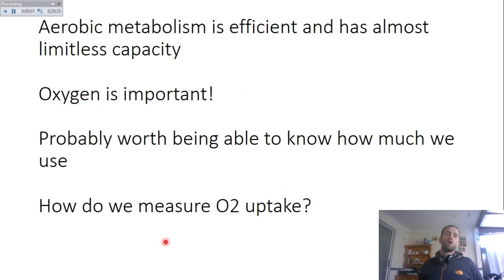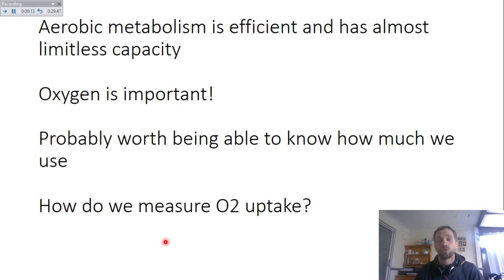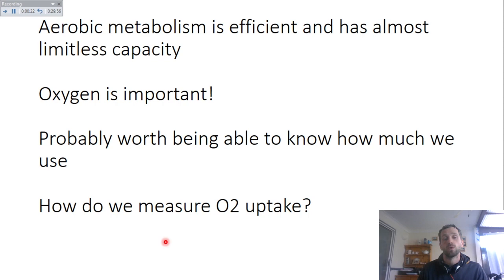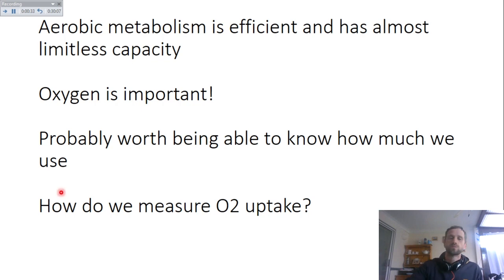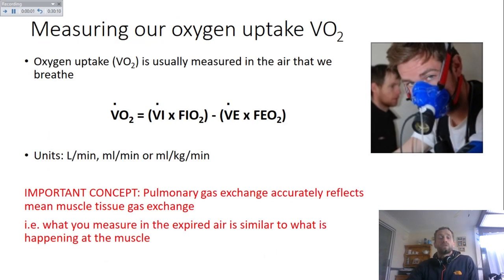All of this has been to establish that aerobic metabolism is an incredibly important system — the most efficient with regard to substrate utilization, with almost unlimited capacity, and most readily used for the activities people typically do. So oxygen is important, and it's worthwhile knowing how much an individual can use and how we can measure it. This is one of the cornerstones of exercise physiology: measuring oxygen consumption, or oxygen uptake.